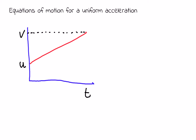In this video we're going to look at the equations of motion for uniform acceleration. First, we need to know what we mean by uniform acceleration — that's one that has a constant acceleration. What I've got here is a velocity-time graph, with velocity increasing in a uniform way. We're going to use this graph to come up with two equations of motion, and then derive a further two.